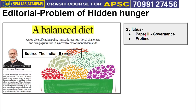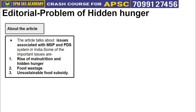Let us understand the background of this article. It talks about the problem of hidden hunger, and the root cause identified is the challenges associated with implementation of MSP and PDS system. MSP — Minimum Support Price — is the minimum price at which the government agency FCI procures food crops.